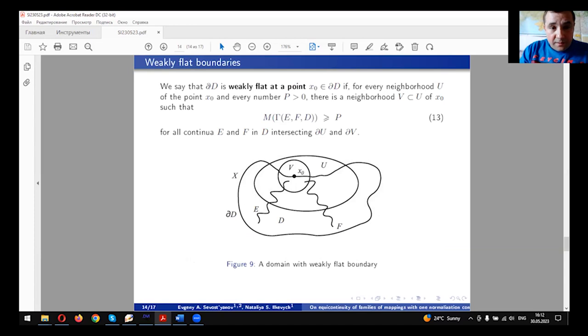We say that the boundary of D is weakly flat at the point x_0 if for every neighborhood U of this point and for every sufficiently big P, there is another, maybe smaller, neighborhood V, which is a subset of U of the point x_0, such that the modulus of families of paths for any continua E and F in D intersecting the boundaries of D∩U and D∩V satisfies the inequality (13). Such domains may have no cuts from inside. There are domains without cuts.